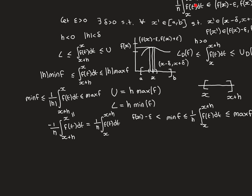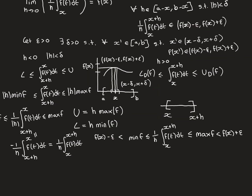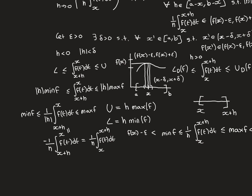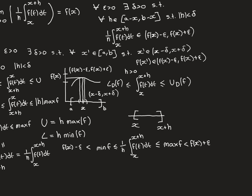Our overall function is sandwiched between the minimum and maximum values of f over the interval from x+h to x. Since mod(h) is less than delta, all points in that interval lie inside the delta interval around x, so the function values there fall inside [f(x)−ε, f(x)+ε]. Hence the maximum and minimum values over that interval are also inside this interval, and therefore our function value must lie between f(x) − ε below and f(x) + ε above.